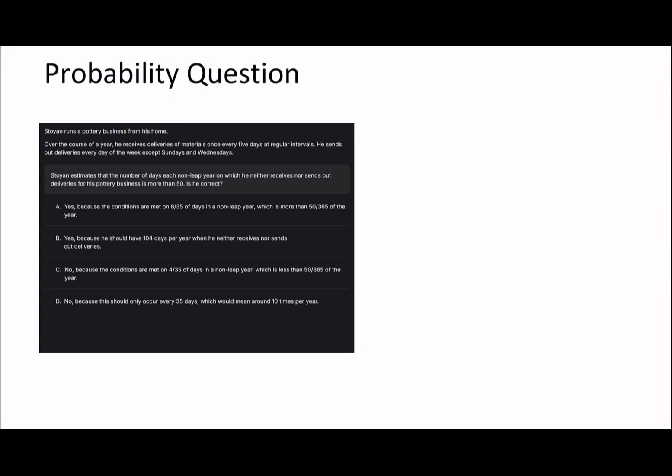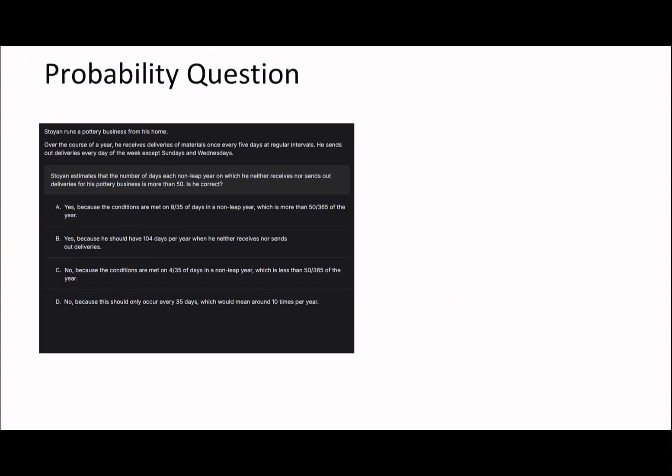So Stoyan estimates the number of days each non-leap year on which he neither receives nor sends out deliveries for his pottery business is more than 50. Is he correct? So over the course of the year, he receives deliveries of materials once every five days at regular intervals. So one-fifth of the days. He sends out deliveries every day of the week except Sundays and Wednesdays. So that means he sends out deliveries five out of seven days. And he receives deliveries once every five, sends out deliveries every day except Sundays and Wednesdays.